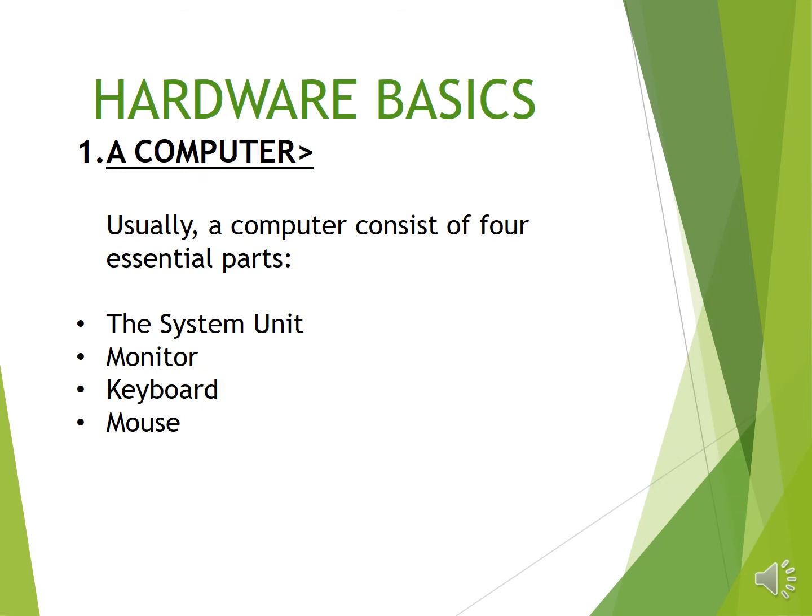The topic is Hardware Basics. As you know, a computer is made up of two broad categories: number 1 is hardware and number 2 is software. Usually a computer consists of four essential hardware parts: the system unit, monitor, keyboard, and mouse.